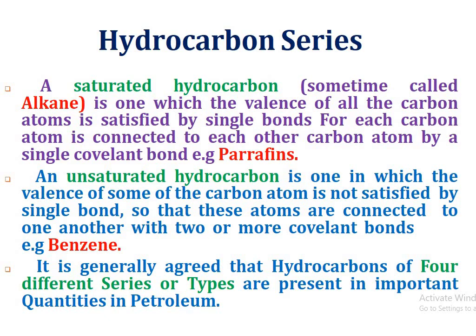In the hydrocarbon series, a saturated hydrocarbon called an alkane is one in which the valency of each carbon atom is satisfied by single bonds — that is, paraffin. An unsaturated hydrocarbon is one in which the valency of some carbon atoms is not satisfied by single bonds, so those atoms are connected by two or more bonds — as in benzene. It is generally agreed that hydrocarbons of four different series are present in significant quantities in petroleum.